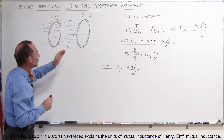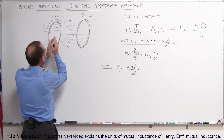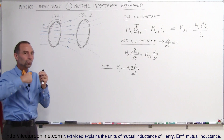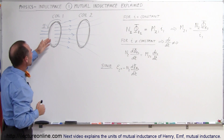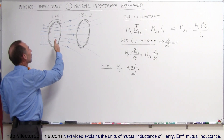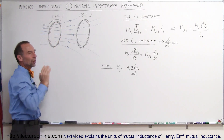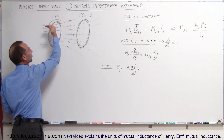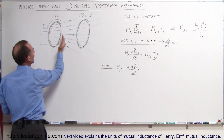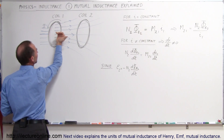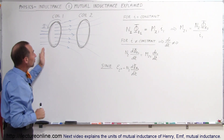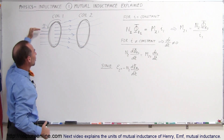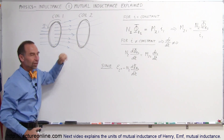Here we have two coils — two very short coils, each with a number of turns. Turns means the number of times the wire goes around the loop. A battery causes a current to exist in coil number one, going around from the back towards the front. If you curl your fingers in the direction of the current, your thumb points in the direction of the magnetic field inside the coil. When a second coil is placed nearby, some of the magnetic field lines will go through that second coil as well.